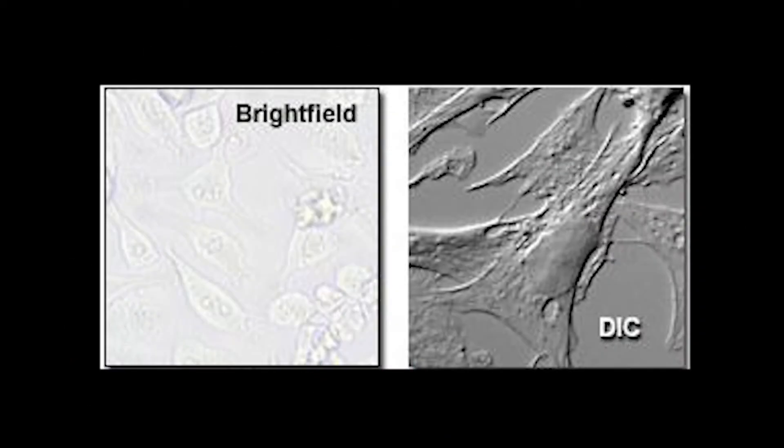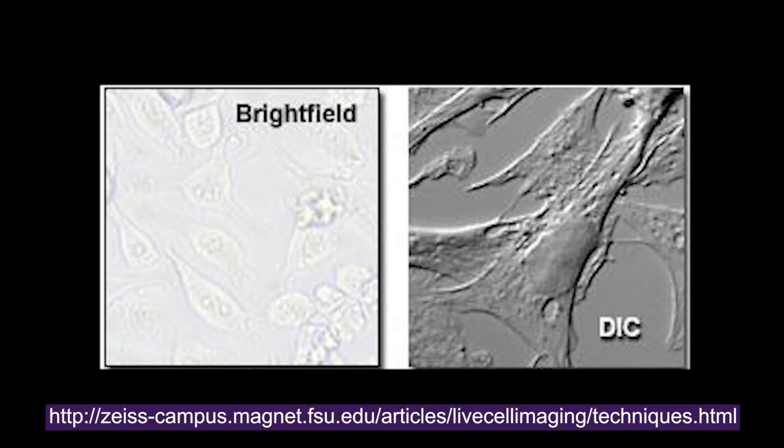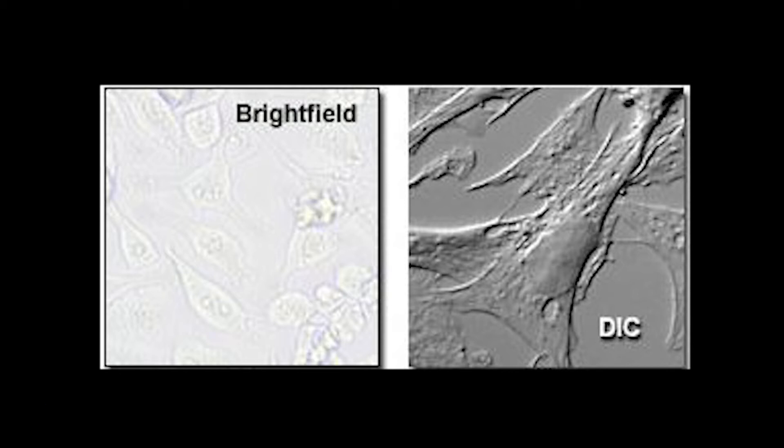Like phase contrast imaging, Differential Interference Contrast, or DIC, is used for viewing colourless and transparent specimens and live cells, where the object appears dark against a bright background.